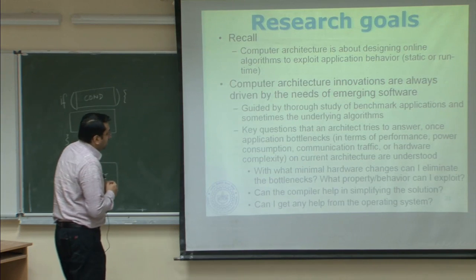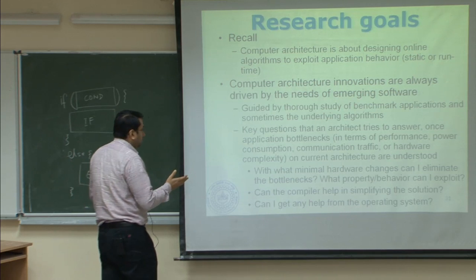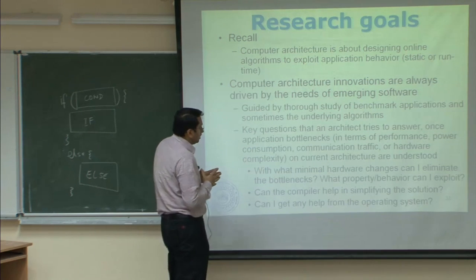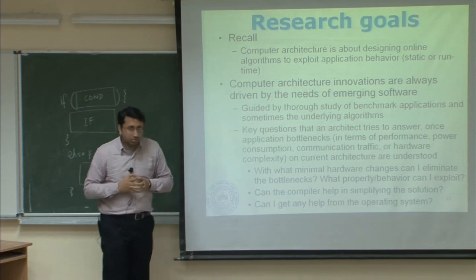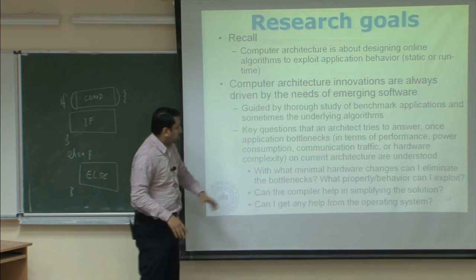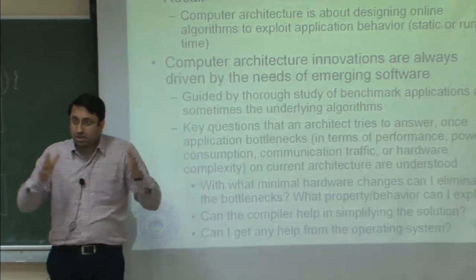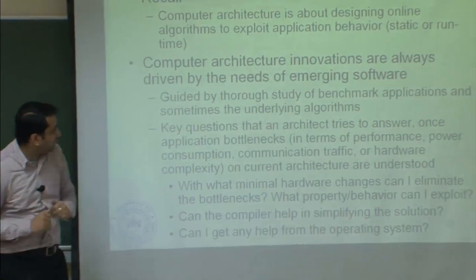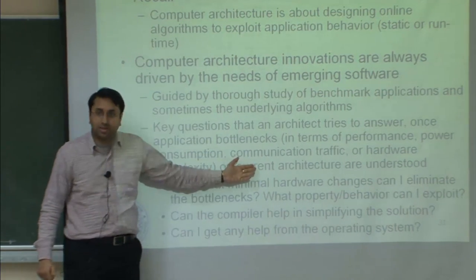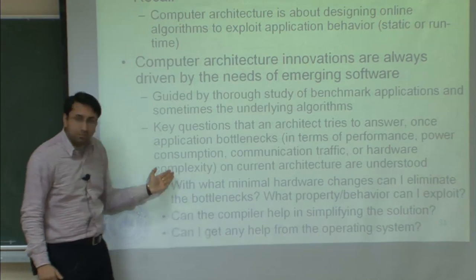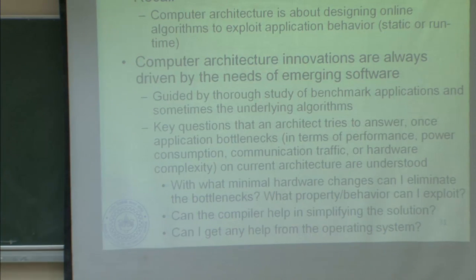Key questions an architect tries to answer once application bottlenecks — in terms of performance, power consumption, communication traffic, or hardware complexity — are understood on the current architecture: first, study the application on the current architecture across all these dimensions, then ask three basic questions.